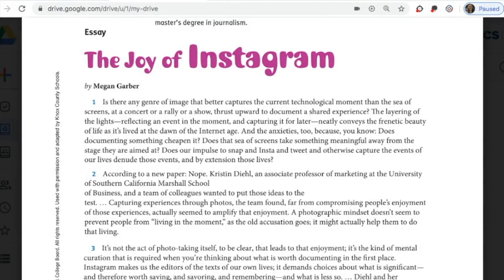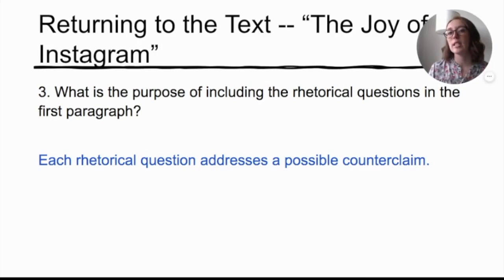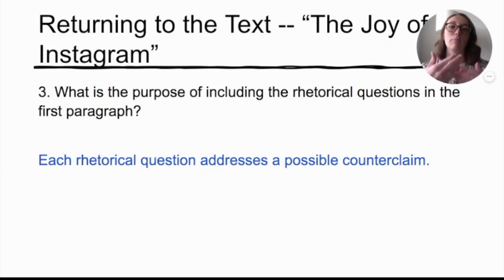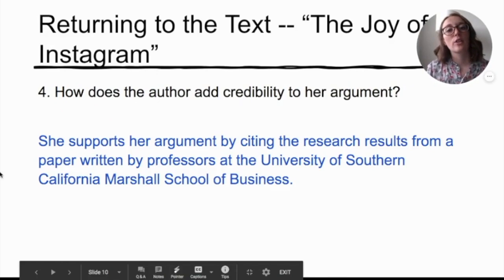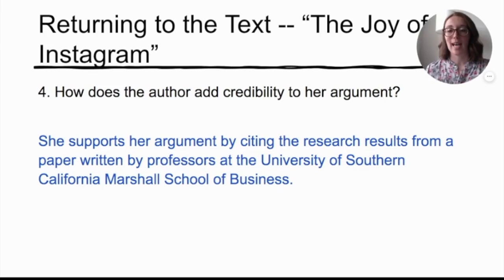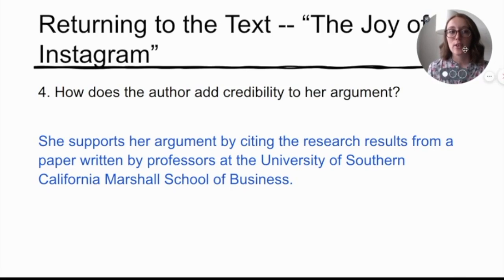She's bringing up all the things people might say if they were to argue with her claim — that's what we call the counterclaim. In the first paragraph she brings up all the opposing points, and why do you think she did that? I think it's because she knows readers will be thinking those things as they read, so she brings them up immediately and then tries to prove them wrong. Last question: How did the author add credibility to her argument? She supports her argument by citing research results from a paper written by professors at the University of Southern California Marshall School of Business. That definitely adds to her credibility — her ethos.